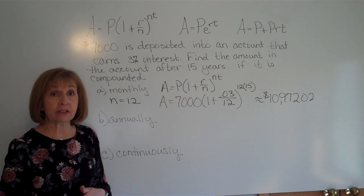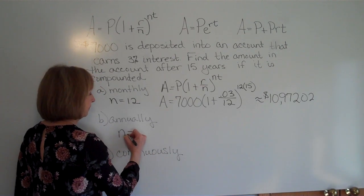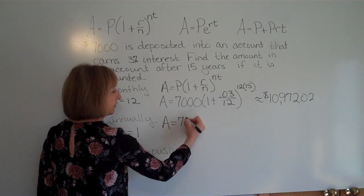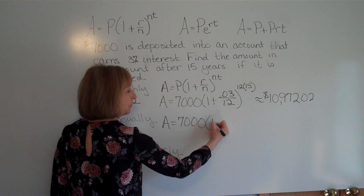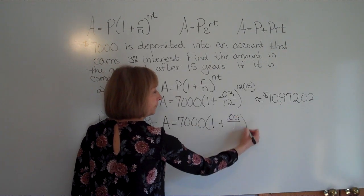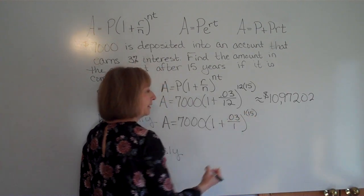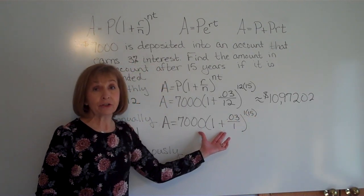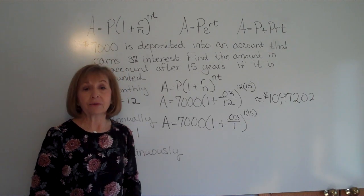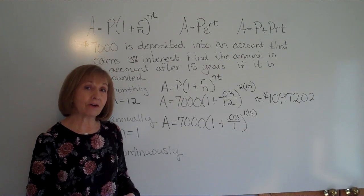For annual compounding, it compounds just once a year, so N equals 1. The amount is 7,000 times (1 plus .03 divided by 1) raised to the 1 times 15 power. Keying that through gives $10,905.77.